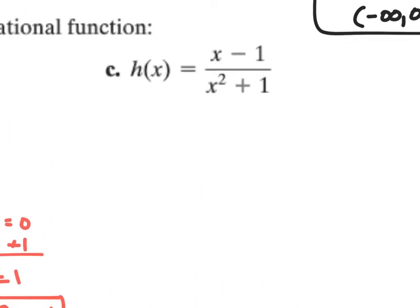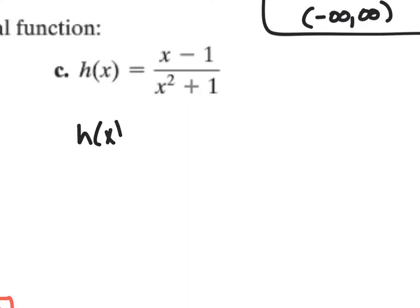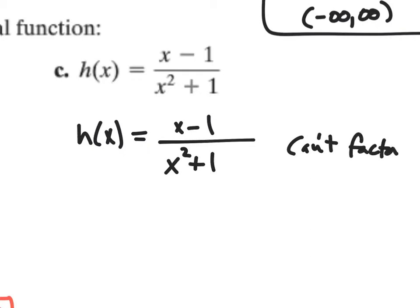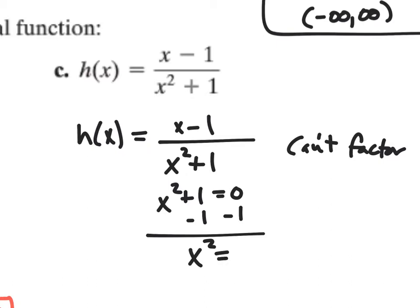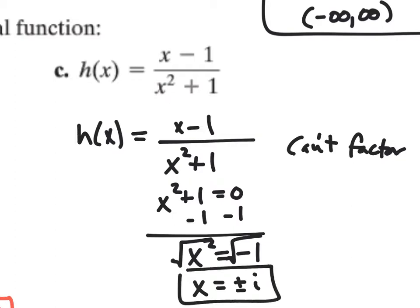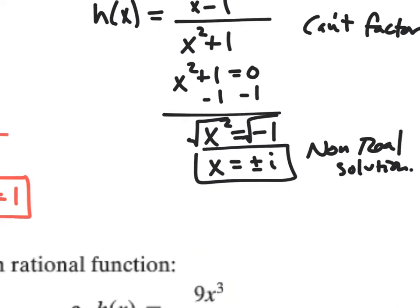Part c: h(x) equals x minus one over x squared plus one. I can't factor anything. Setting the denominator equal to zero gives x squared equals negative one, so x equals plus or minus i. This is a non-real solution, so therefore this function has no vertical asymptote or holes.